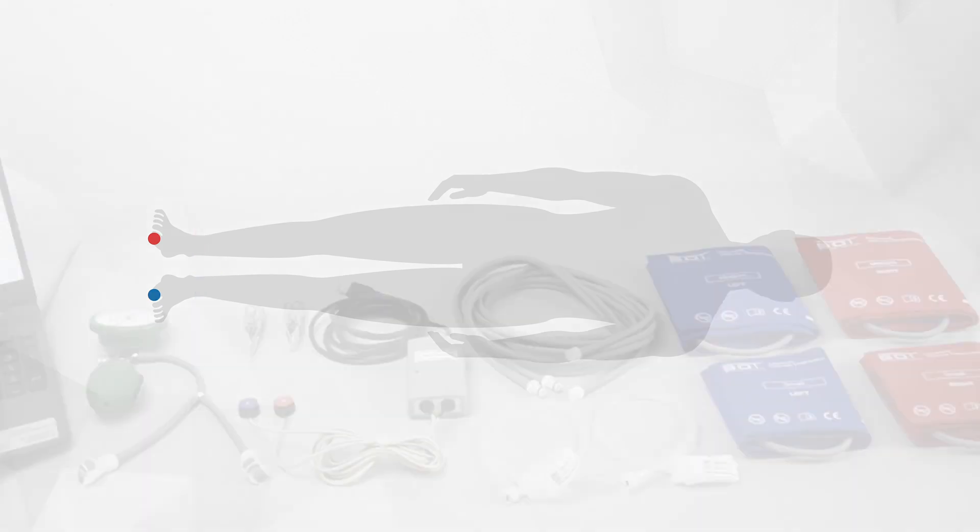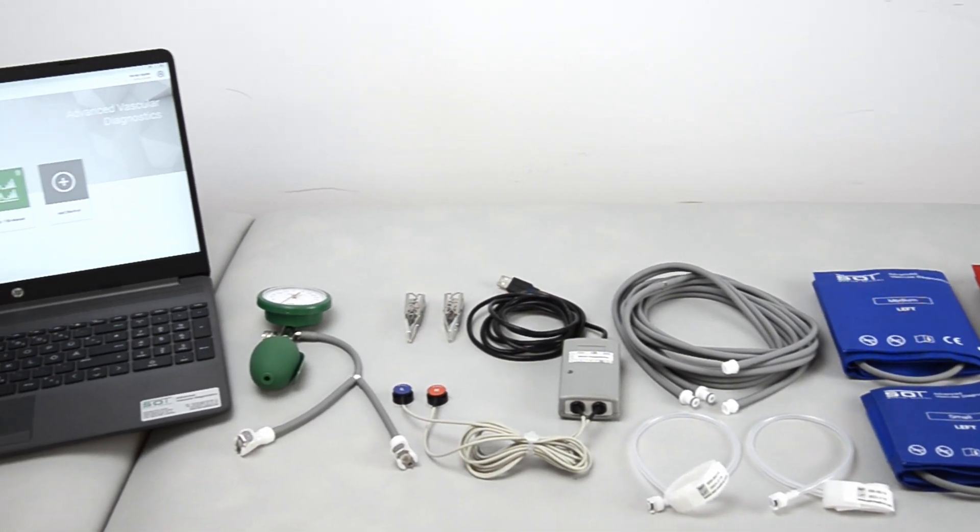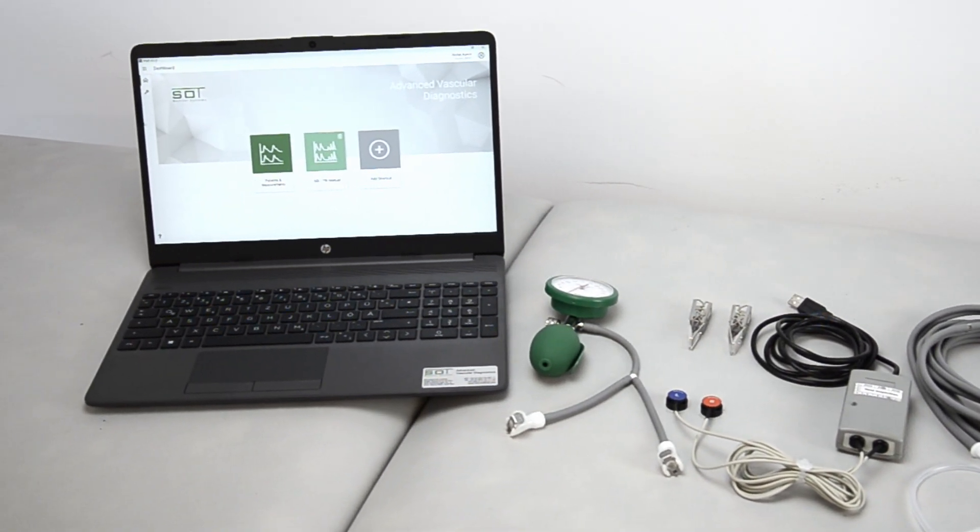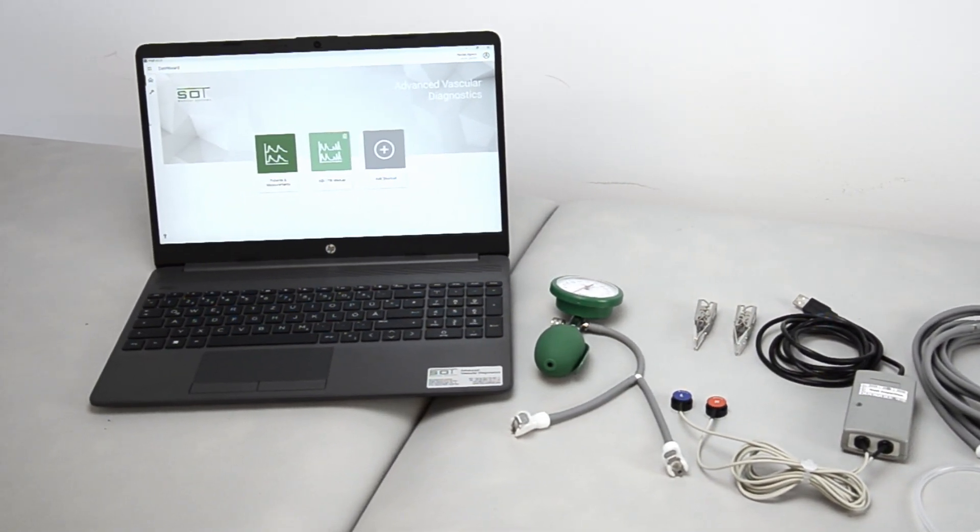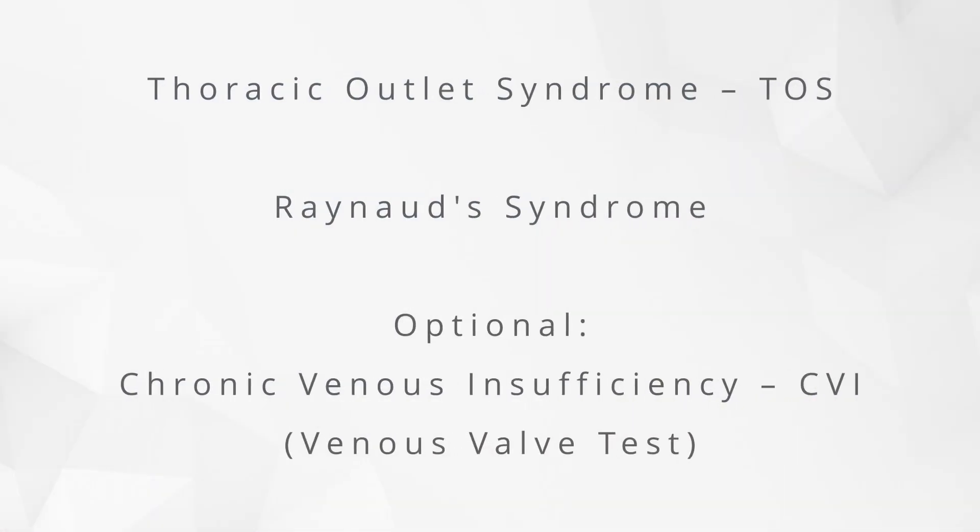The system comes with a two-channel PPG system with optical sensors, cuffs in different sizes to cover fingers, toes, ankle and upper arm, and the hand pump with a manometer. In addition, the system supports thoracic outlet syndrome tests, Raynaud syndrome tests or optionally chronic venous insufficiency tests.